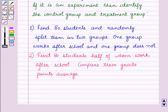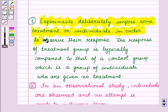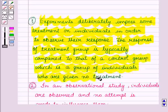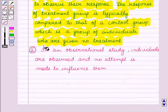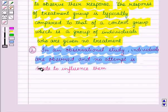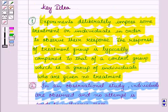Now before starting the solution of this question, you should know some results. First is: experiments deliberately impose some treatment on individuals in order to observe their response. The response of the treatment group is typically compared to that of a control group, which is a group of individuals who are given no treatment. Second: in an observational study, individuals are observed and no attempt is made to influence them. These results will work as key ideas for solving the given question.